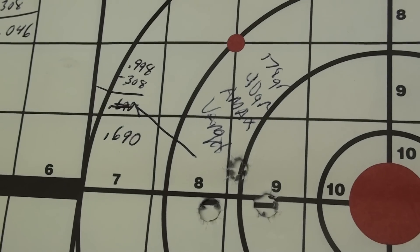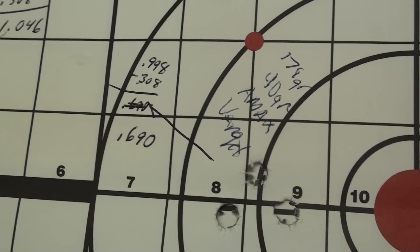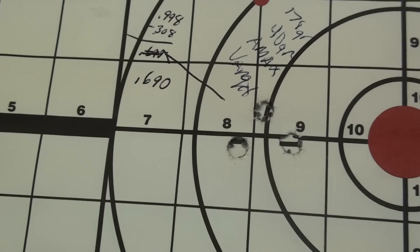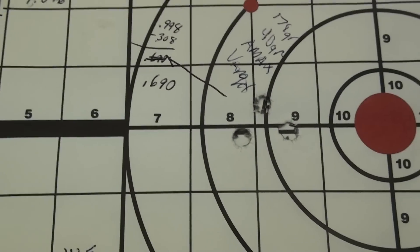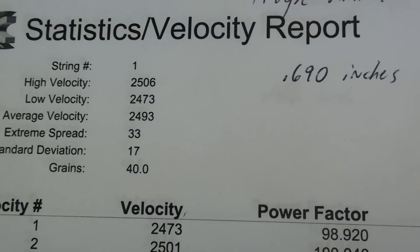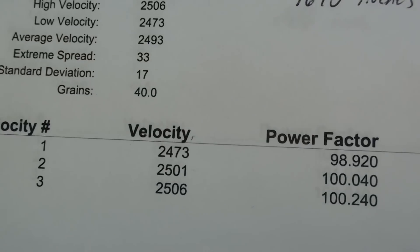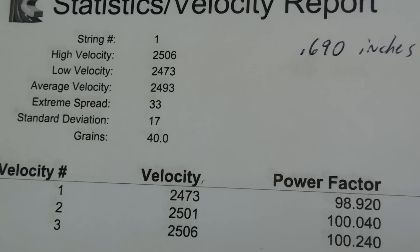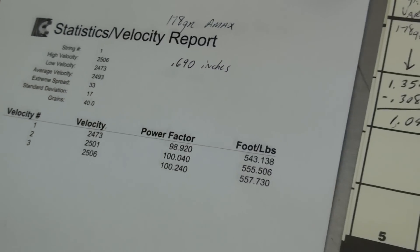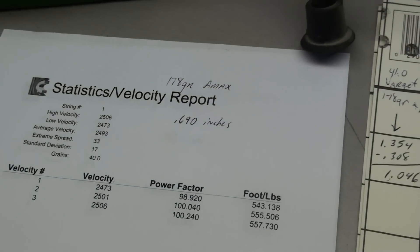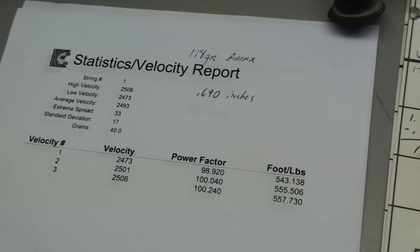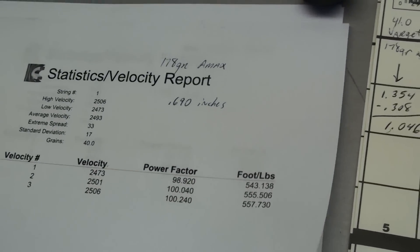With 40 grains I got a group at 0.7 inches. You can see that three right there, and here's some of the statistics off my chrony. Not too bad, still sub-MOA at 100.